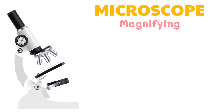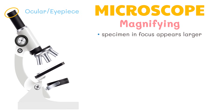The magnifying parts are where the specimen in focus appears larger. This part is the ocular, also called eyepiece. It is a lens that is attached to a draw tube.